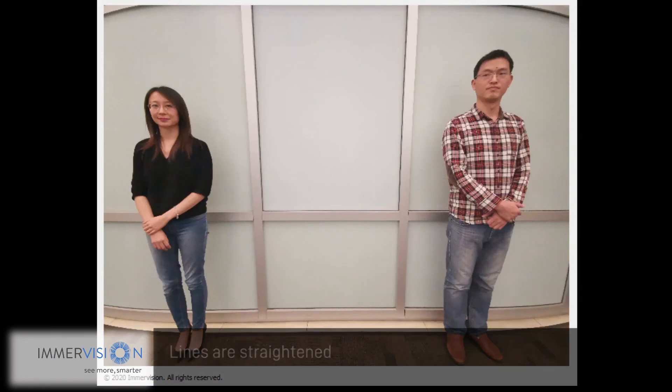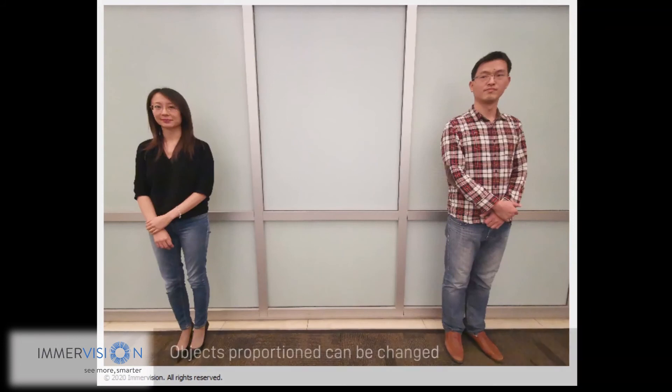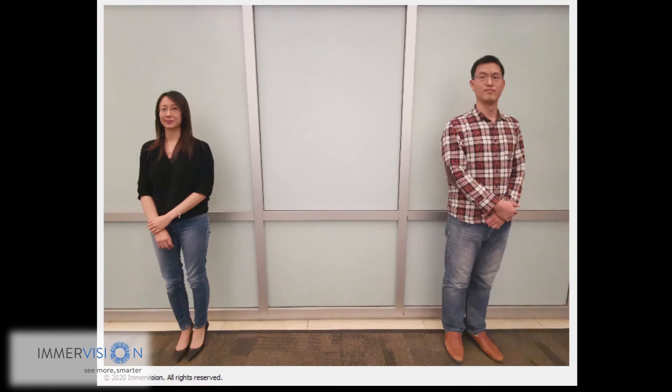We provide an algorithm that first straightens the lines of the background, then also changes object proportions in real time. The people are quite stretched, and the algorithm also corrects face distortion. By combining all these different algorithms, we can correct face distortion and recreate the right body proportions while maintaining straight lines.